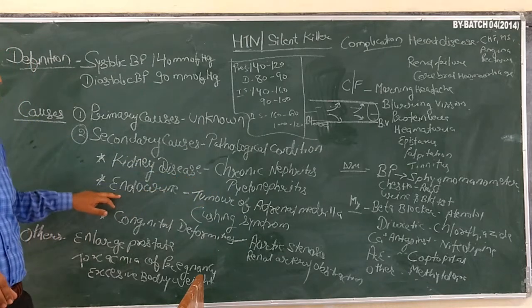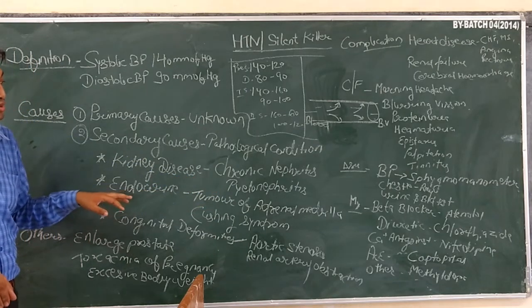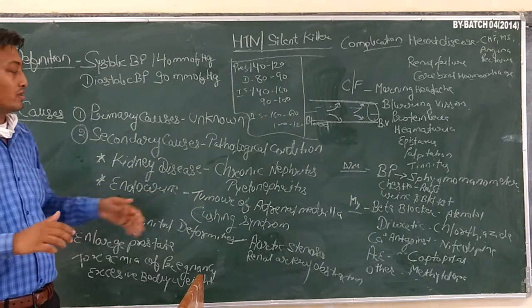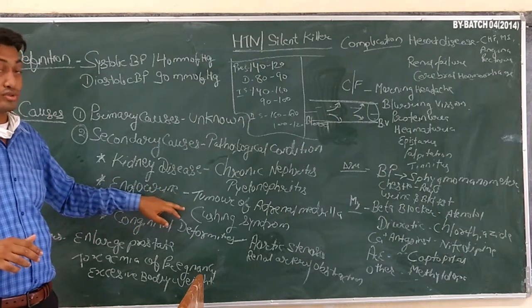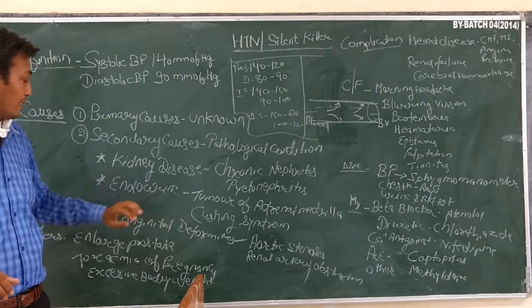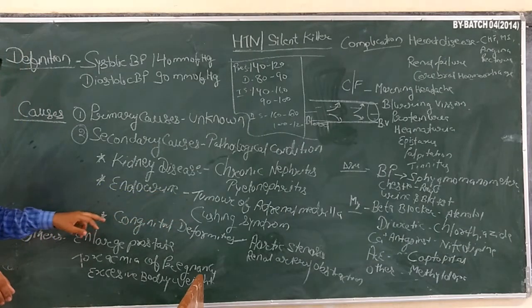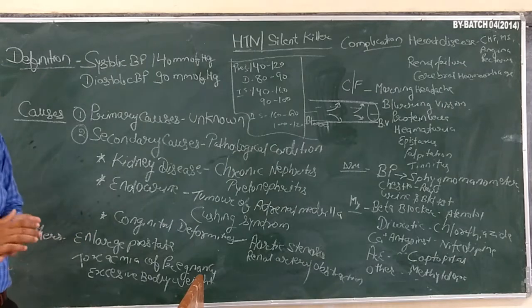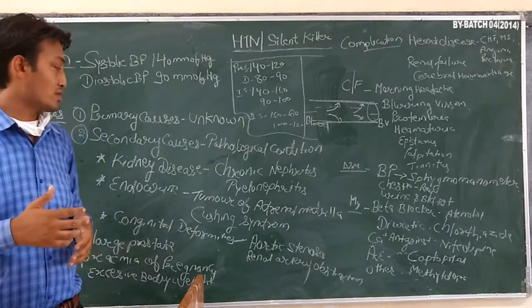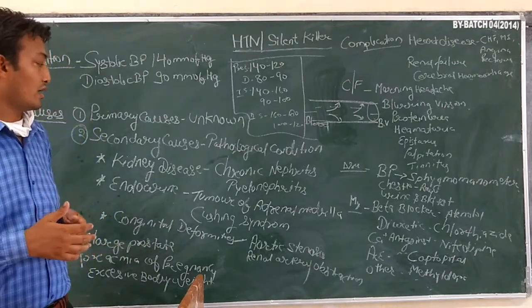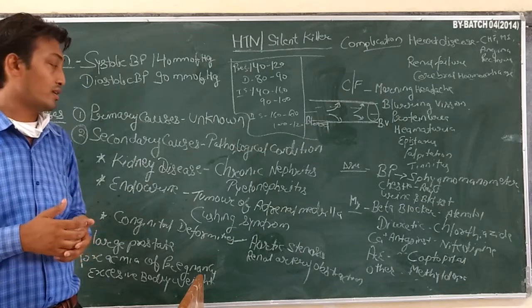It includes endocrine disorders such as a tumor of the adrenal gland. Congenital deformity includes stenosis and renal aortic stress.